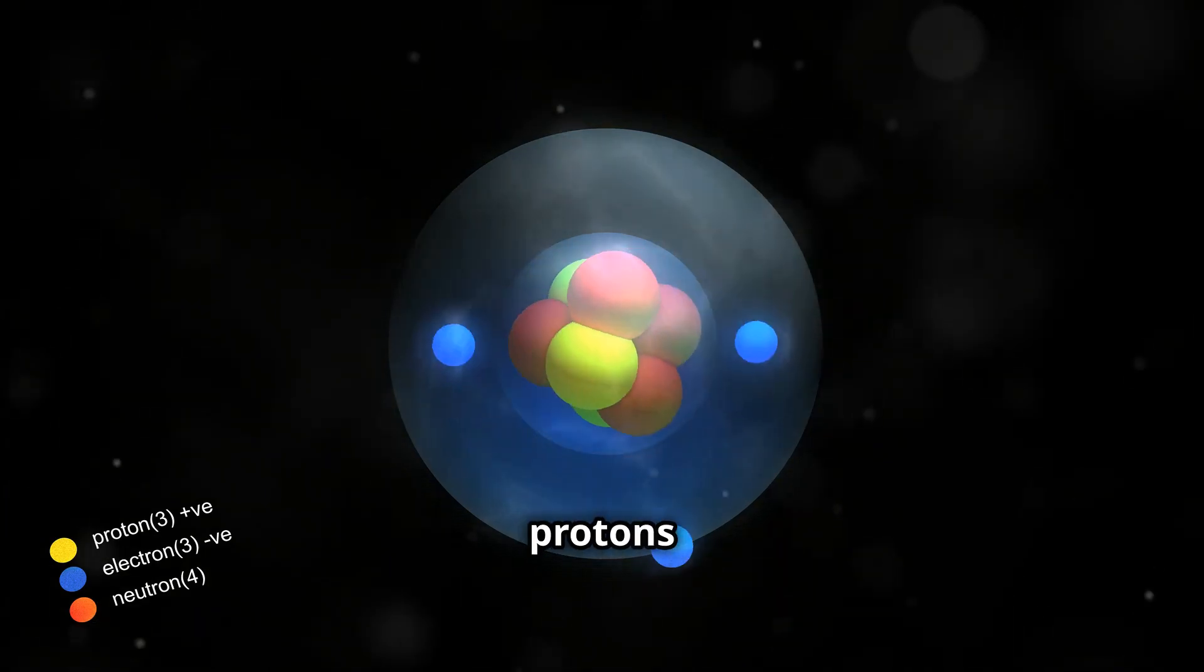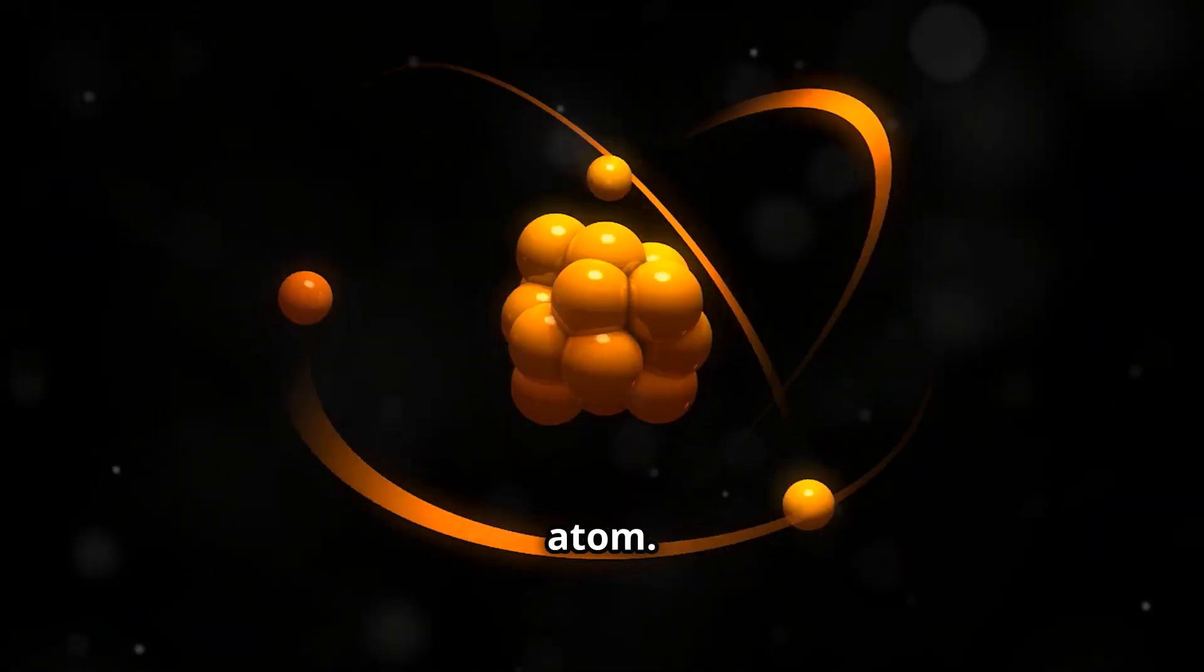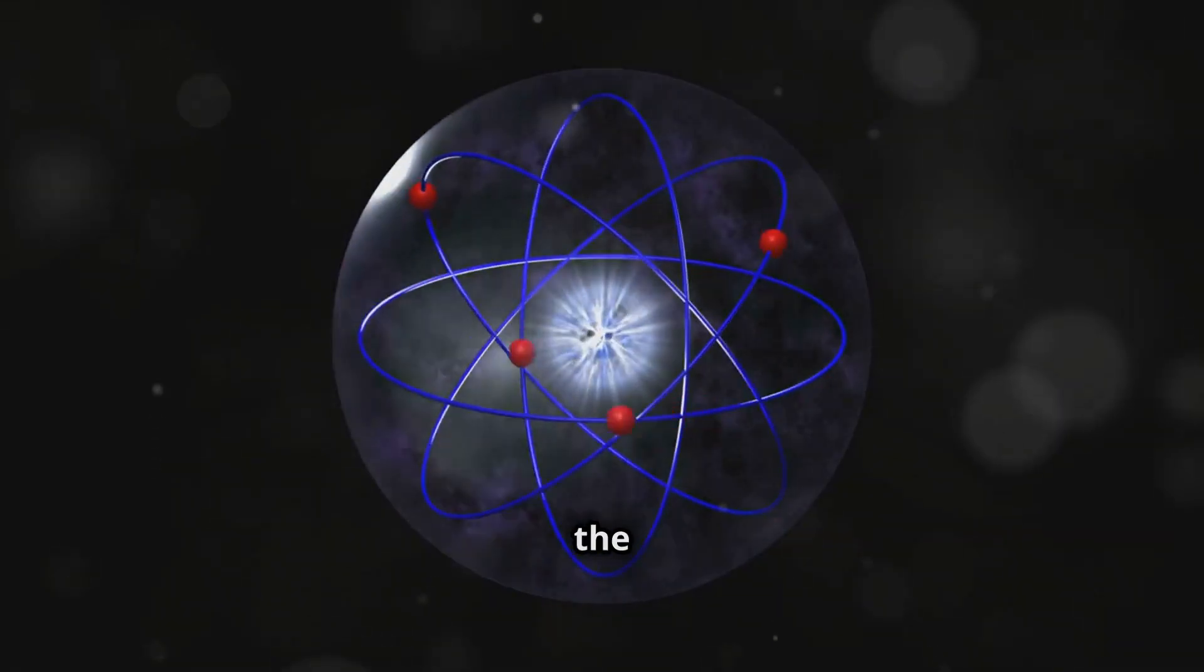Quarks are the particles that make up protons and neutrons, the particles found in the nucleus of an atom. Leptons, on the other hand, include electrons, the negatively charged particles that orbit the nucleus.